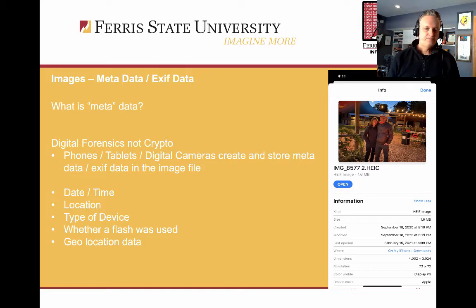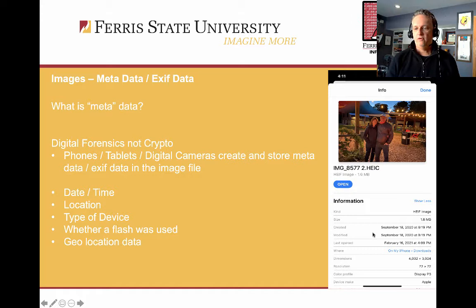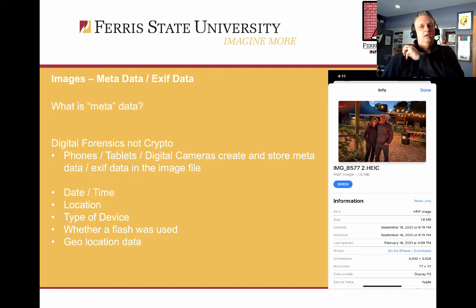Here I have an example of looking at metadata on my phone. This is a picture of some friends of ours, and this particular image is from an iPhone. This is some of the metadata that an iPhone will display about an image: the size, the date the image was created, last viewed on the device, and the device make — this was taken on an Apple iPhone. If we continue to look at the metadata, we would see the geographic coordinates, latitude and longitude of where the picture was taken, so an investigator could determine if this picture was at a location of interest.